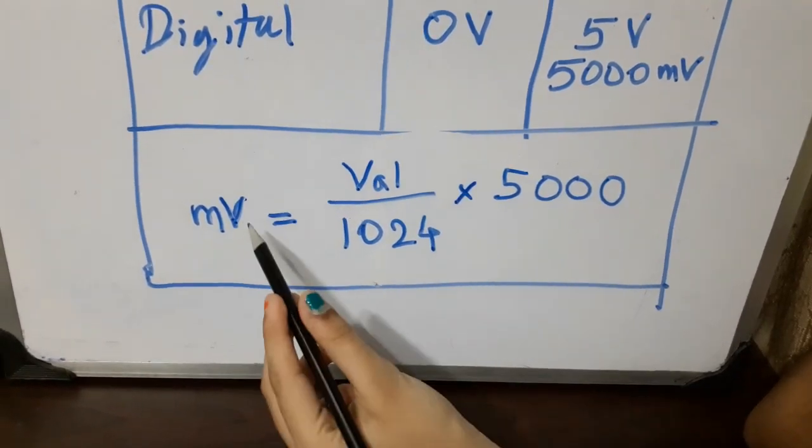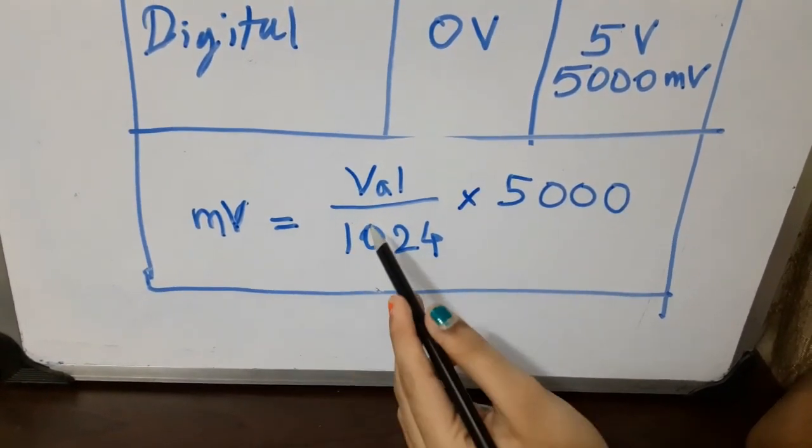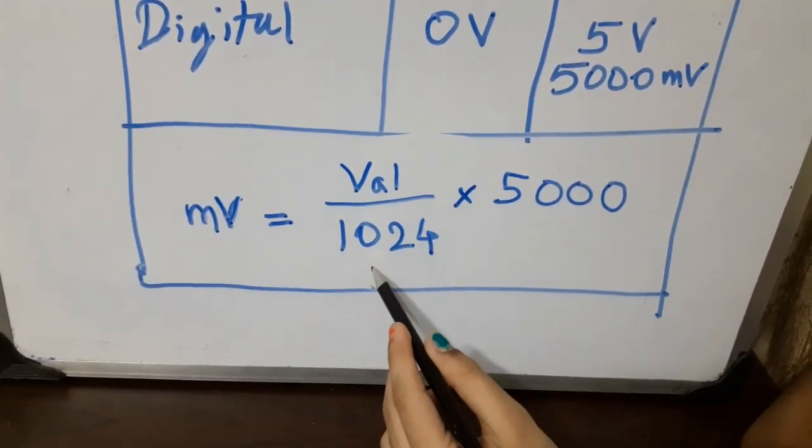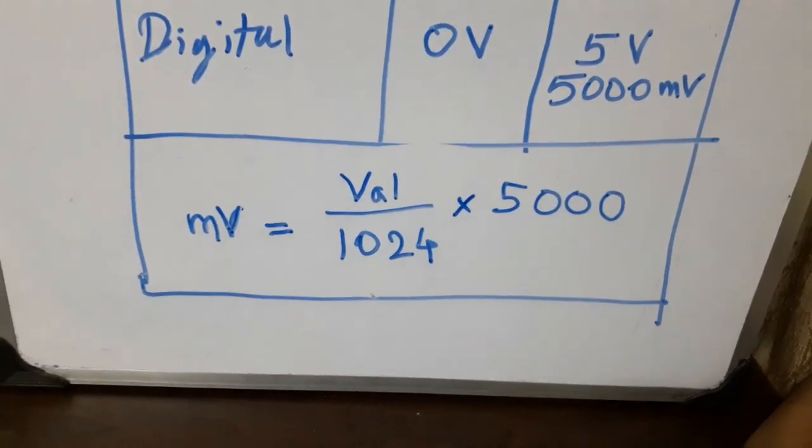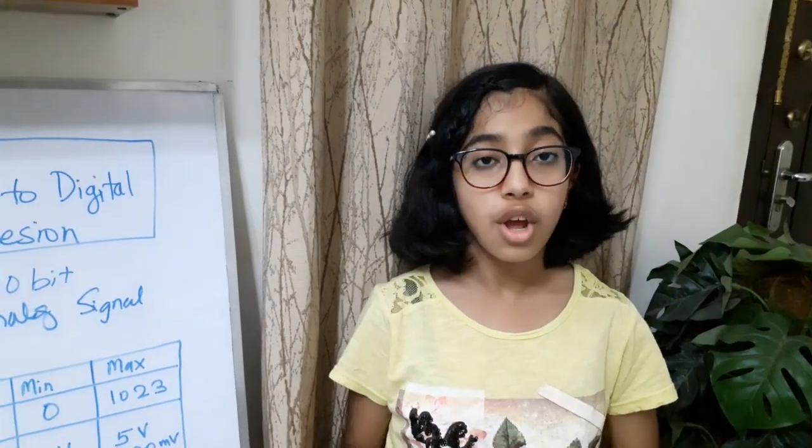So, finally, the value in millivolt will be val divided by 1024 into 5000. Make sure you divide the reading in millivolt by 10 to get the temperature in Celsius.